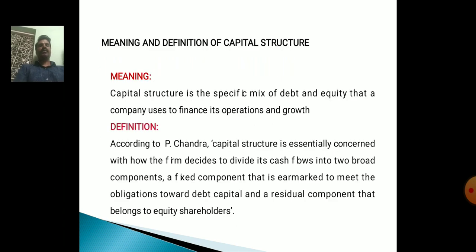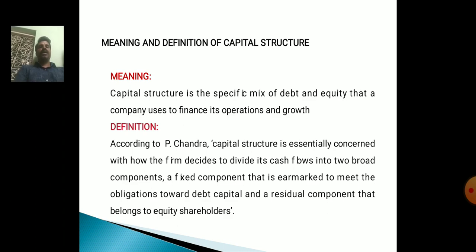Meaning and Definition of Capital Structure. Capital Structure is a specific mix of debt and equity that a company uses to finance its operations and growth. According to P. Chandra, Capital Structure is an essential concern with how the firm decides to divide its cash flow into two broad components: a fixed component that is earmarked to meet the obligations towards debt capital, and a residual component that belongs to equity shareholders.